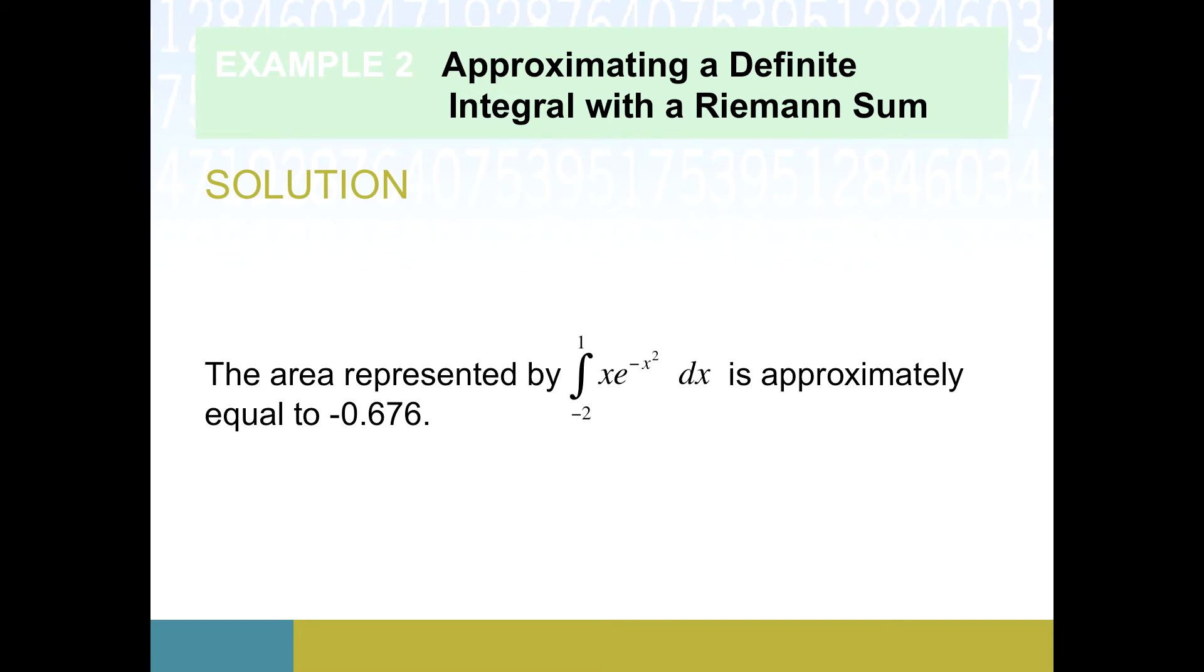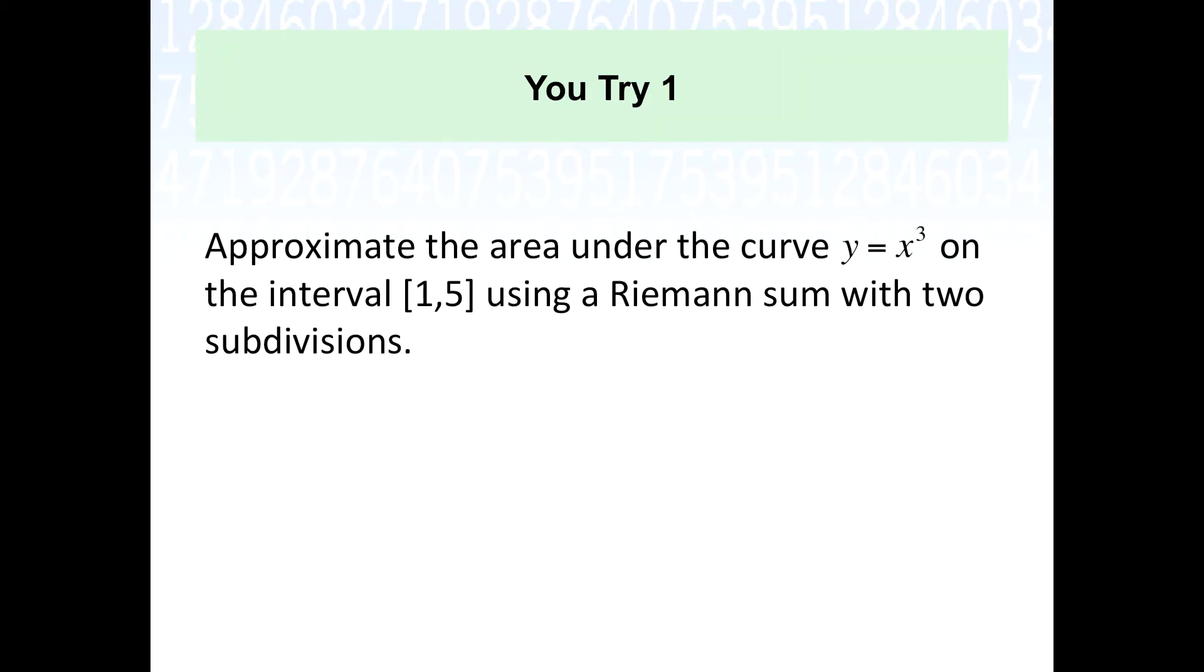The last thing I'll leave you with is an example for you to try out. The goal would be to take this curve y equals x cubed, use the Riemann sum—remember that's the sum of these rectangular regions, the areas of these rectangular regions—and this is relatively nice because it's only two subdivisions. If you want to try that out, pause the video.